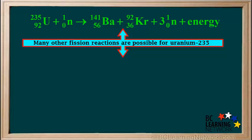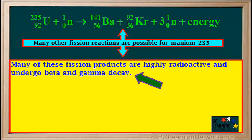This is only one of the reactions that take place when uranium-235 undergoes fission. Many other reactions are possible, all with different fission products. Many of these fission products are highly radioactive and undergo beta and gamma decay.